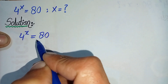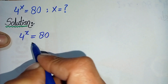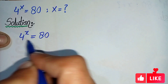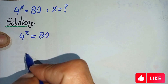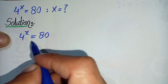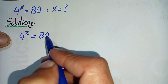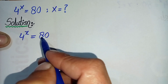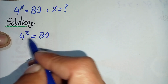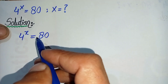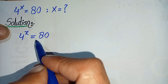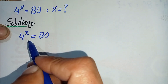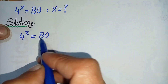There are two different approaches to solve this question. The first approach is to take log directly on both sides and simplify. The second approach is to first factorize 80, simplify it, and then take log on both sides. Here we will use the second approach.